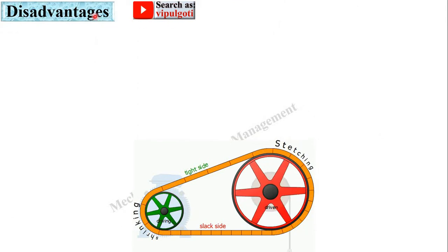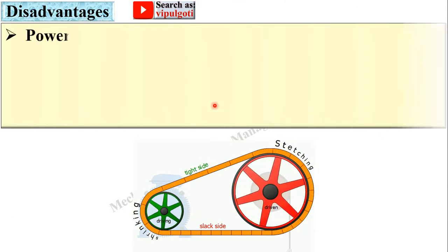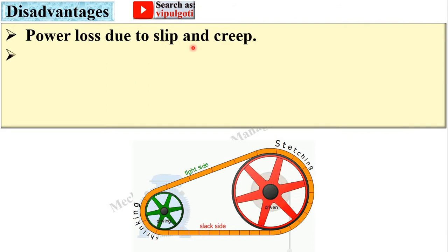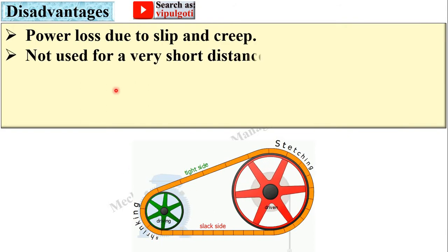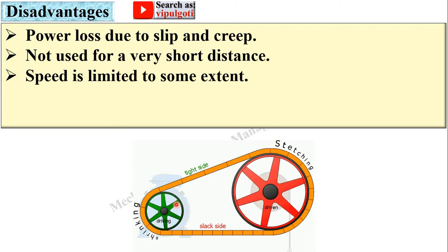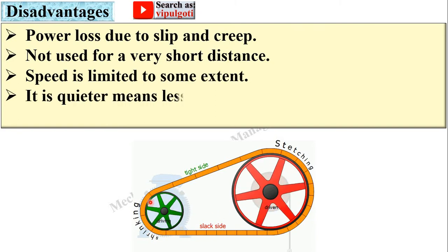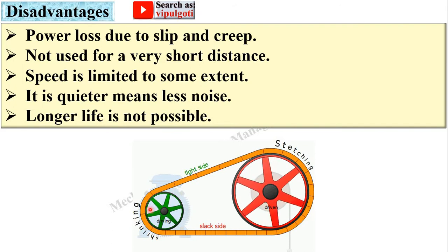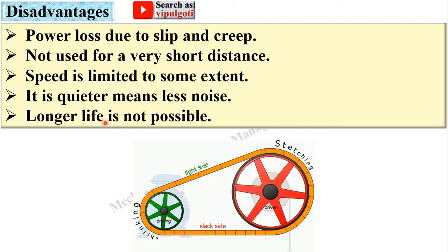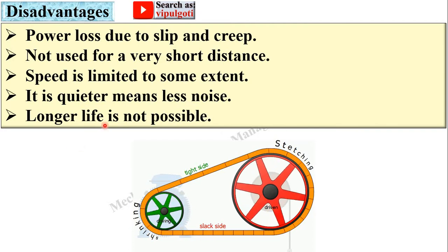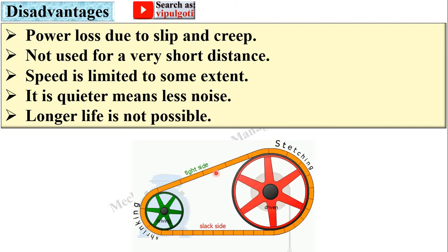Now disadvantages of the belt drive. Power loss due to slip and creep. Not used for very short distances. Generally, belt drive is suitable for long distances between shafts. Speed is limited to some extent only. It is quieter, meaning less noise in case of belt drive. Longer life is not possible because there is less durability of the belt.